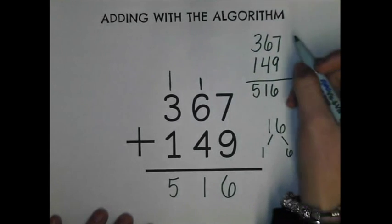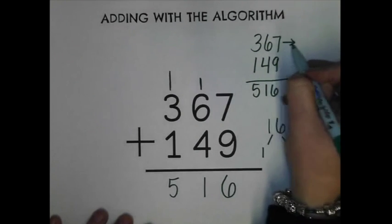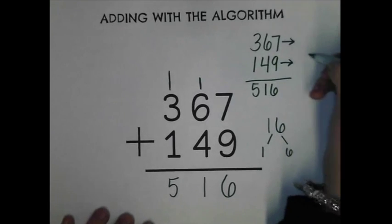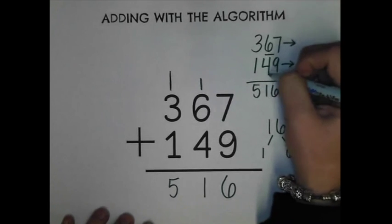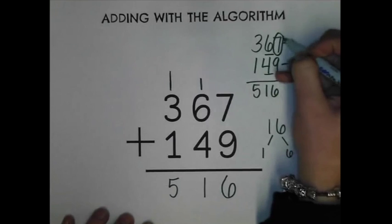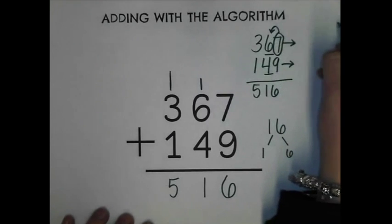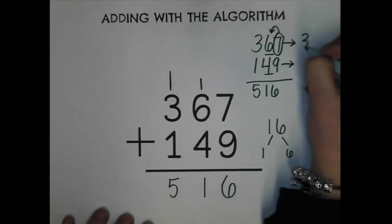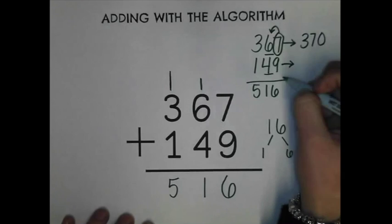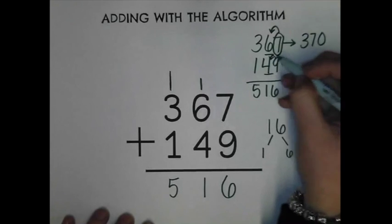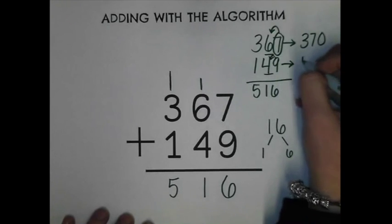Now what I'm going to do is I'm going to round these two numbers to the nearest ten. Three hundred sixty seven. If I look at my seven, my seven tells my six to move up a four, so that becomes three hundred and seventy. And my nine tells my four to move up a four, so that's going to be one hundred and fifty.